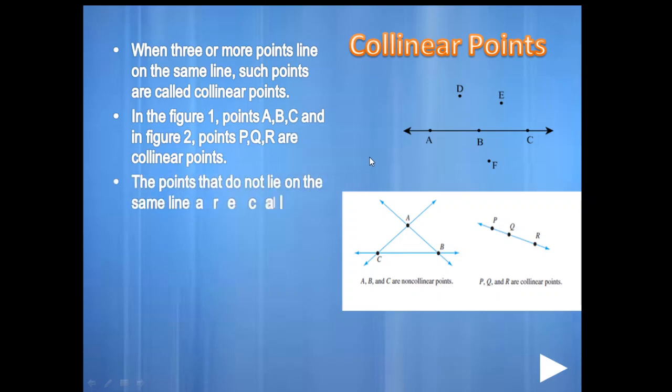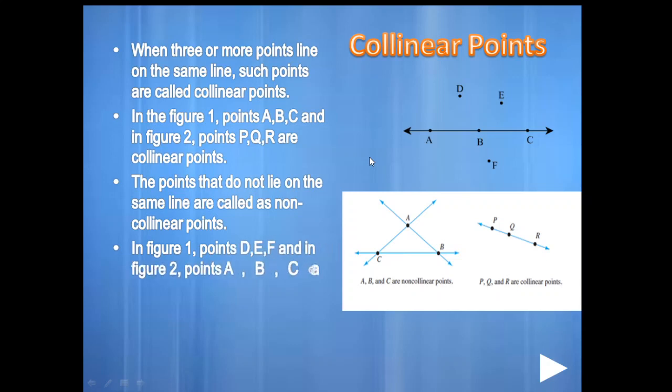The points that do not lie on the same line are called non-collinear points. In figure one, points D, E, F and in figure two, points A, B, C are non-collinear points.